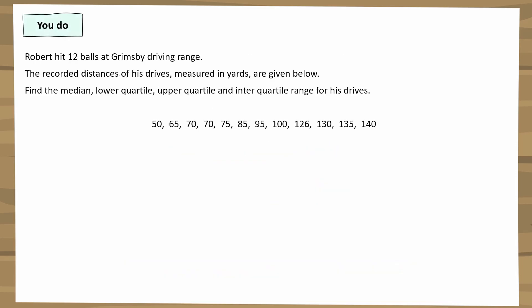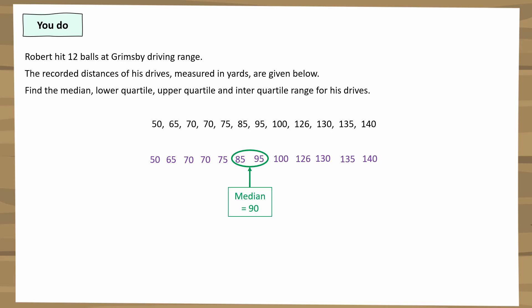Here's one for you to try with an even number of data values. Find the median first, then find the lower and upper quartiles, and use those to find the interquartile range. Pause the video and have a go. The data is already in order, which is a bonus. The median lies between 85 and 95. To find the midpoint, add 85 and 95 to get 180, then halve it to get 90.